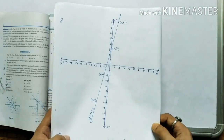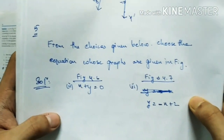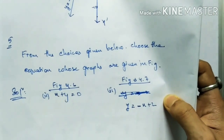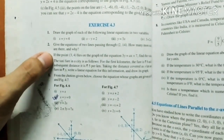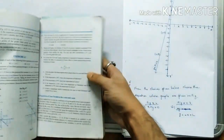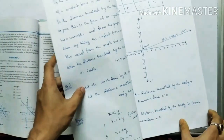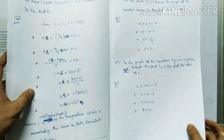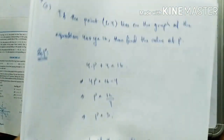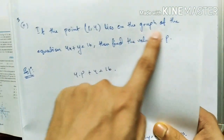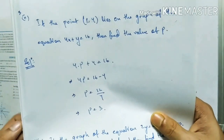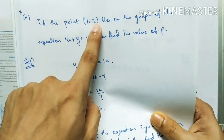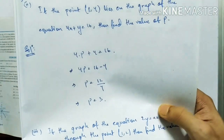Question Number 5: from the choices given, choose the equation whose graph is shown in the figure. Also, in Question 3 there are more sub-questions. If a point lies on the graph of an equation and you need to find the value of P, it means that point is a solution of that equation — substitute the x and y values to find P.